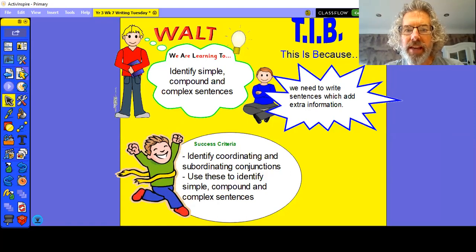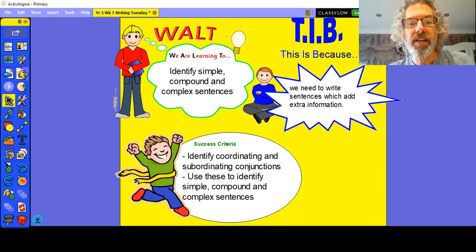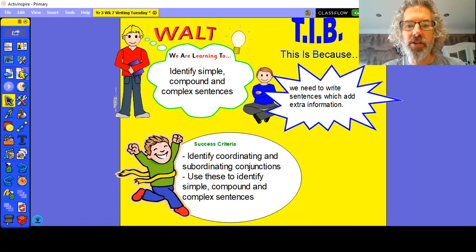Today is particularly focused on grammar. We're going to be learning to identify simple, compound and complex sentences, because we need to write sentences which add extra information. So your success criteria today are to identify coordinating and subordinating conjunctions, and to use these to identify simple, compound and complex sentences.